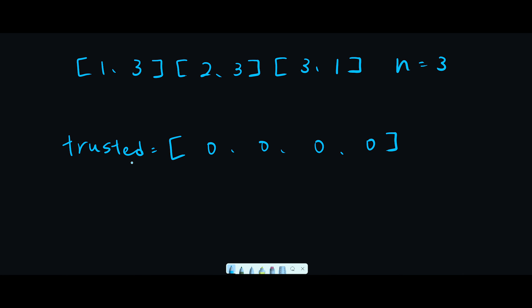I initialized the trusted list and the length is n plus 1, because people are labeled from 1 to n. So we use index 1, index 2, index 3 - that's why we need n plus 1.